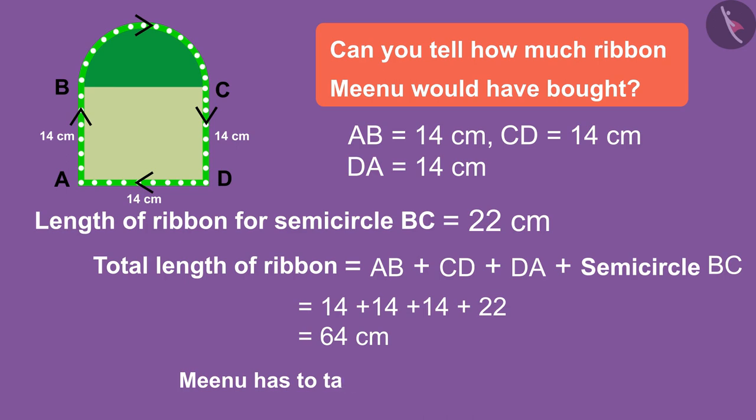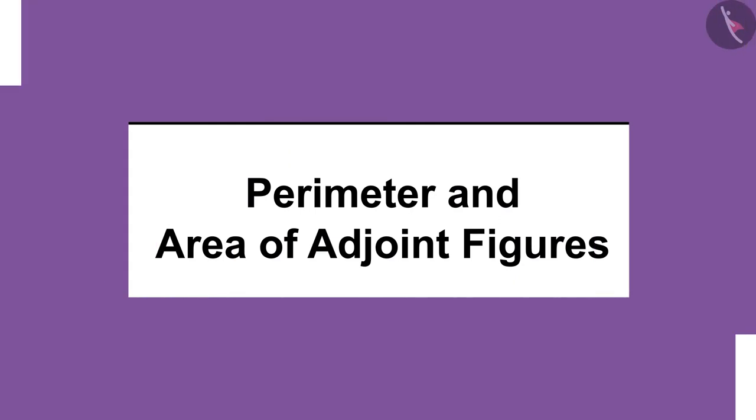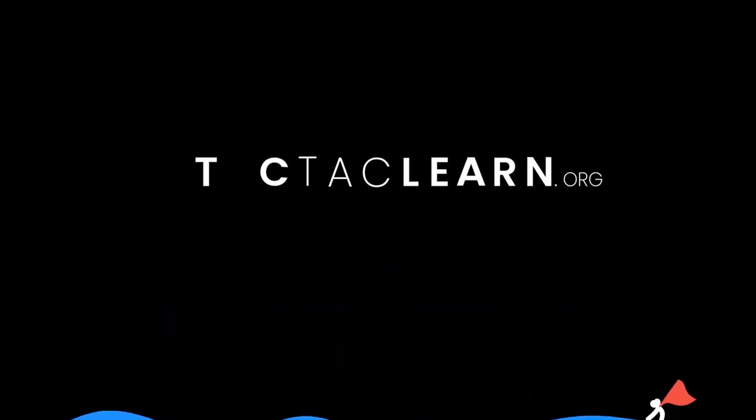Therefore, Minu has to take 64 centimeter ribbon. So, today, we saw how we can find the perimeter and area of adjoint figures. Let's go for... We'll be right back.